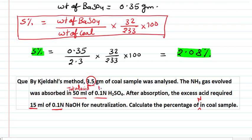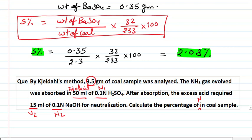So in this practice question: weight of coal is given, total acid volume is given, N1 (normality of acid) is given, V2 (volume of NaOH) and N2 (normality of NaOH) are all given. Please solve this numerical, write your answer in the description box, and if there is any doubt or any kind of suggestion you can also write in the comment box. Thank you so much.